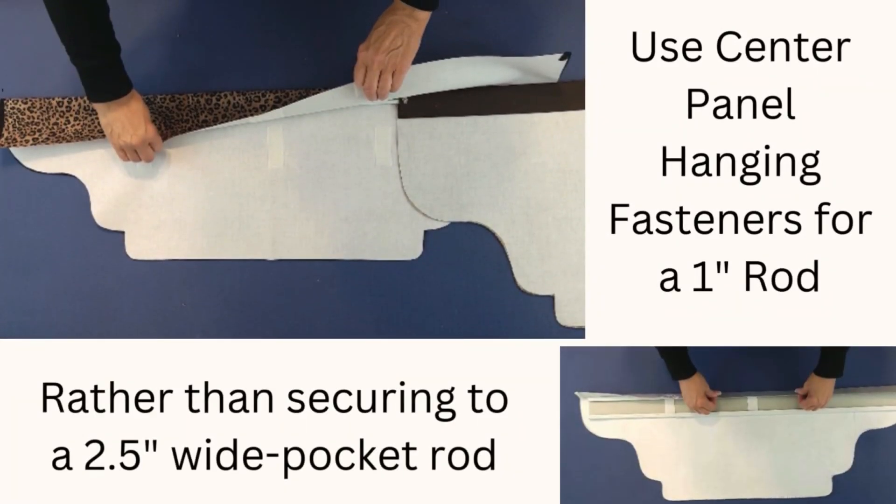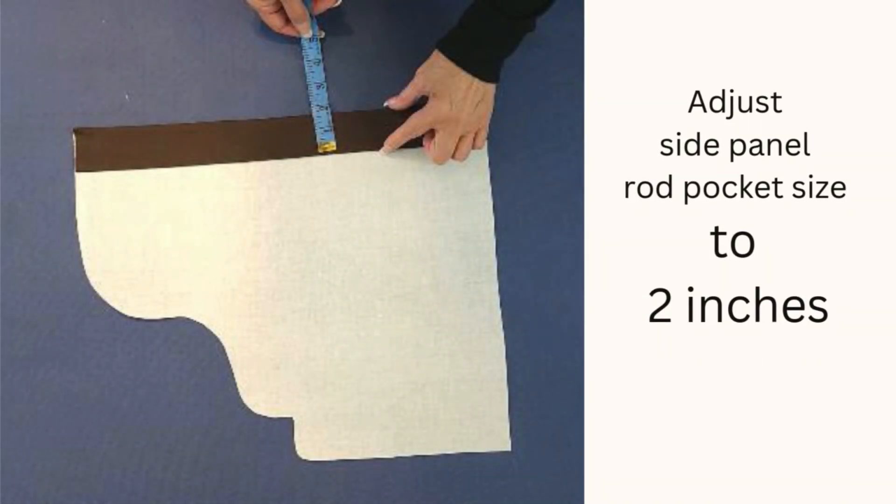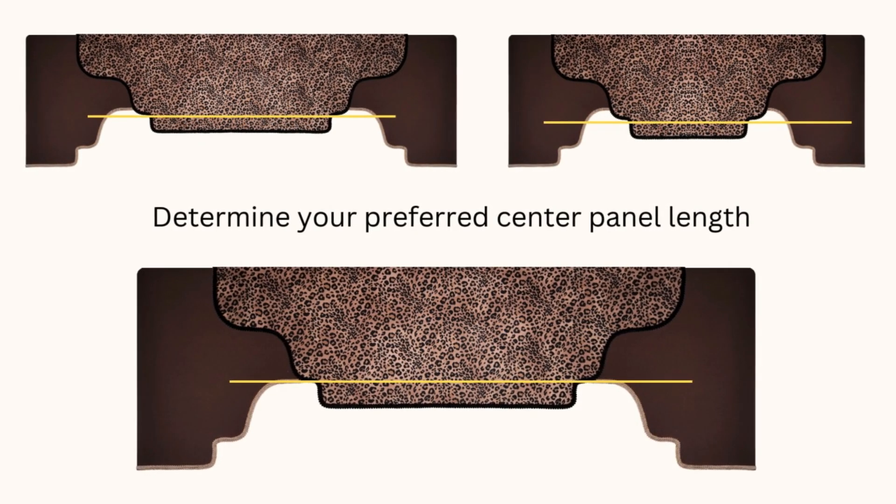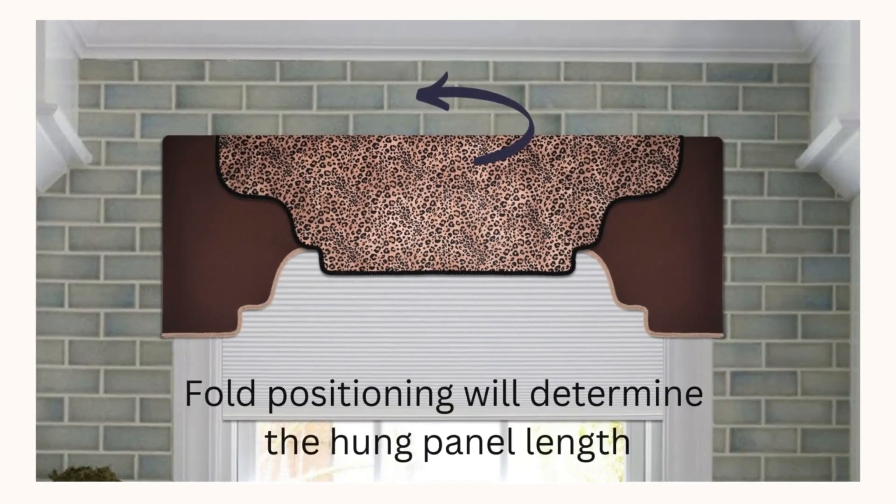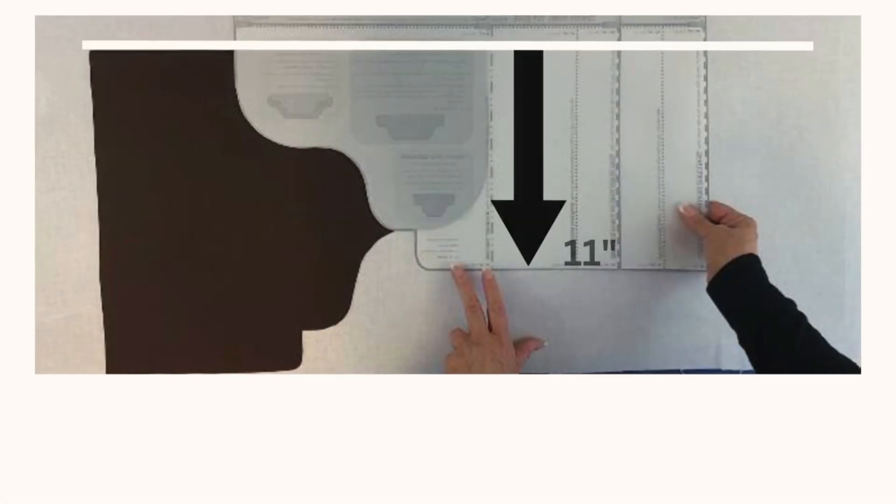Begin by making your side panels and adjust your side panel rod pocket to a 2-inch size. Once your side panels are complete, you can determine the depth of your center panel. Keep in mind we'll be folding this panel over the rod and creating fasteners, so we need an additional 4 inches above the rod, which determines the panel length.